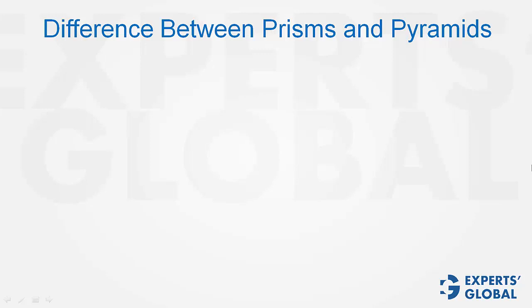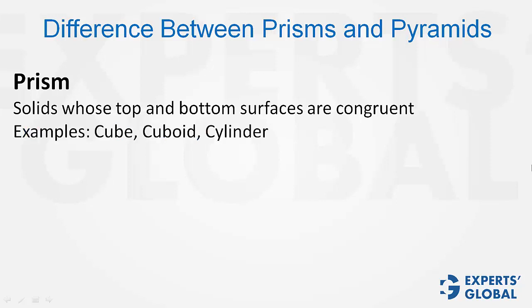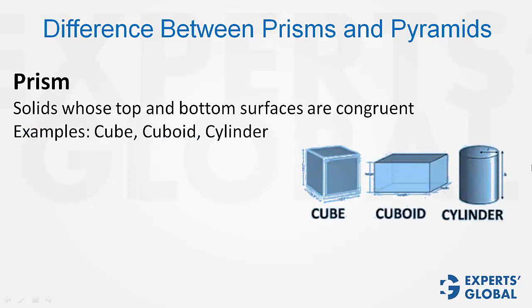Difference between prisms and pyramids. Prisms are solids whose top and bottom surfaces are congruent. For examples: cube, cuboid, cylinder. We will figure out that all these solids have a congruent base and top.